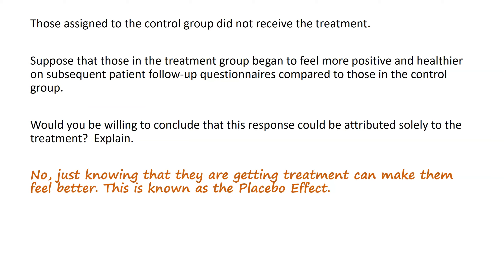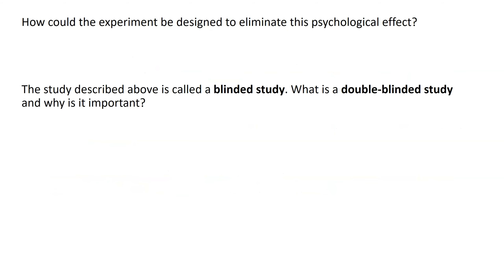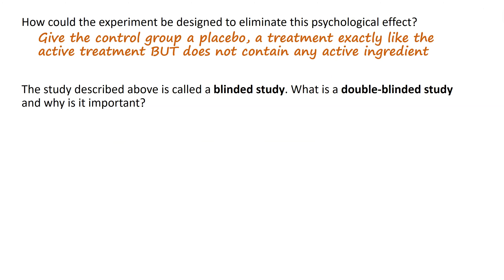The placebo effect is something we can't eliminate, but we can control for it by giving the control group a placebo — a treatment that is exactly like the active treatment but contains no active ingredient. For Parkinson's patients who received nothing, a placebo would look like giving them an injection so it appears they've gotten the same procedure, but without any active ingredient. This raises ethical considerations, and there are ways to design studies to account for the placebo effect as best as possible.